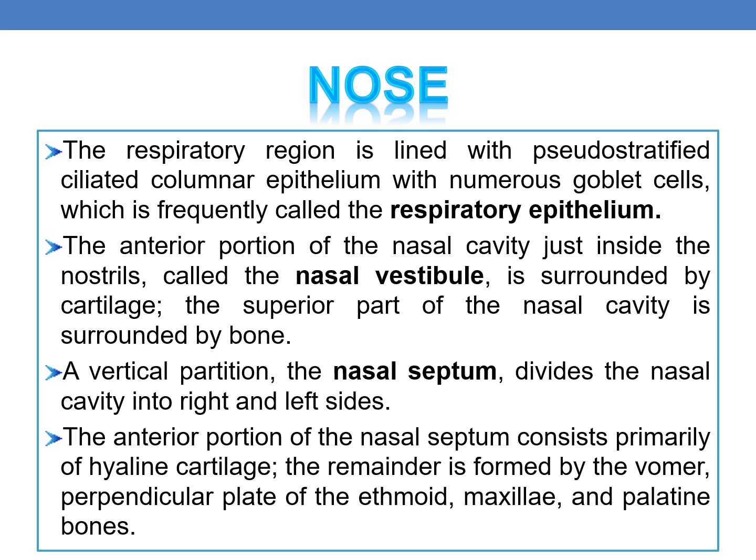The superior part of the nasal cavity is surrounded by bone. The nasal septum is a vertical partition that divides the nasal cavity into right and left sides. The anterior portion of the nasal septum consists primarily of hyaline cartilage, and the remainder is formed by the vomer, perpendicular plate of the ethmoid, maxillae, and palatine bones.